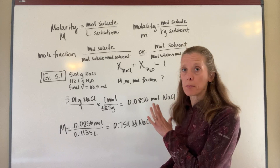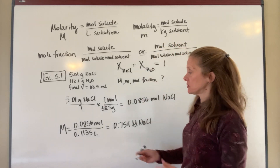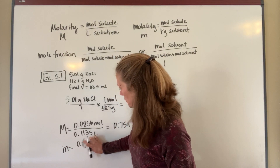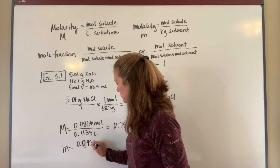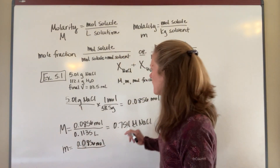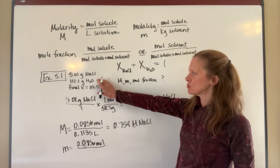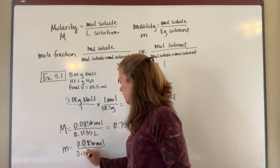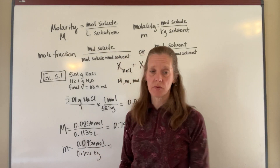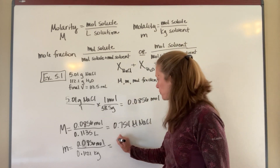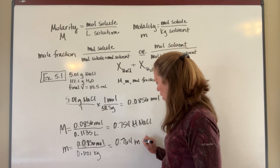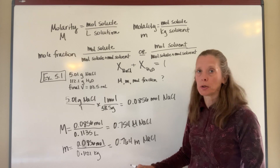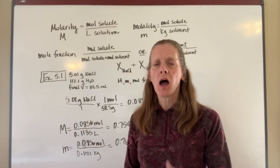To calculate molality, I use kilograms of solvent. So molality equals 0.0856 moles of NaCl divided by 0.1121 kilograms of water (converting 112.1 grams to kilograms), which gives 0.764 m NaCl. You can see the numbers are similar to molarity but not exactly the same.